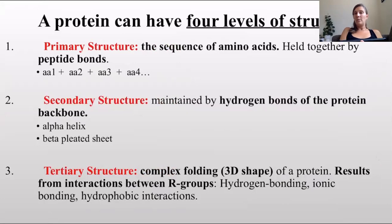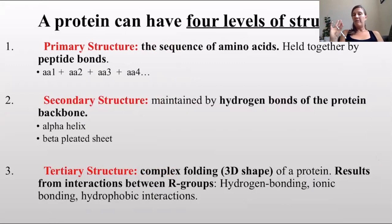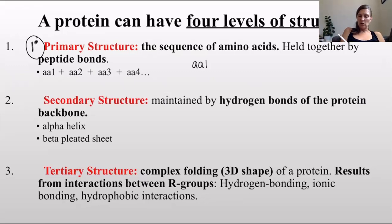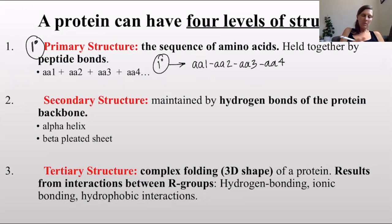Proteins fold in different ways - this is something that confuses students and we have a lab that really helps. There are four levels of structure or four levels of folding. The primary structure is just the sequence of amino acids - which of the 20 are held together and in what order. So primary structure is: amino acid one, amino acid two, amino acid three, amino acid four, and so on.